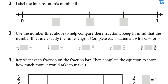Label the fourths on the number line. They started us at zero, and we're trying to get to one. I would have my first fourth, second fourth, third fourth. And like we said before, one is the same as four-fourths. There's the first fourth, there's the second, there's the third, and there would be all four of them highlighted.